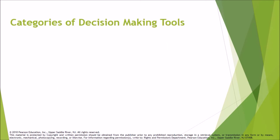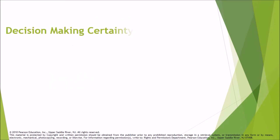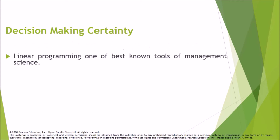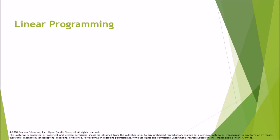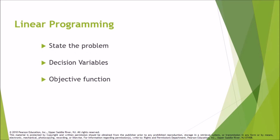The categories of decision-making tools are: certainty, risk, and uncertainty. Decision-making under certainty uses linear programming, one of the best-known tools of management science, used to determine the optimal allocation of an organization's limited resources. Steps include stating the problem, defining decision variables, forming an objective function, and identifying constraints.